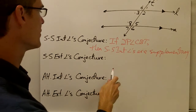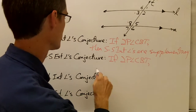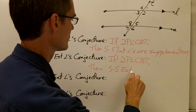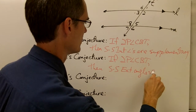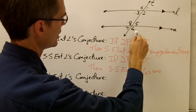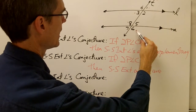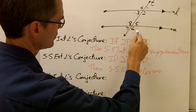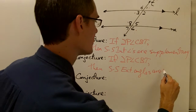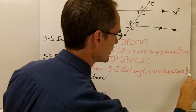Same side exterior angles: if two parallel lines are cut by a transversal, then same side exterior angles are supplementary. For example, angle 1 and angle 6 are same side exterior angles. Since angle 1 appears acute and angle 6 appears obtuse, I don't think those two angles are congruent, so I'm going to say those angles are supplementary.